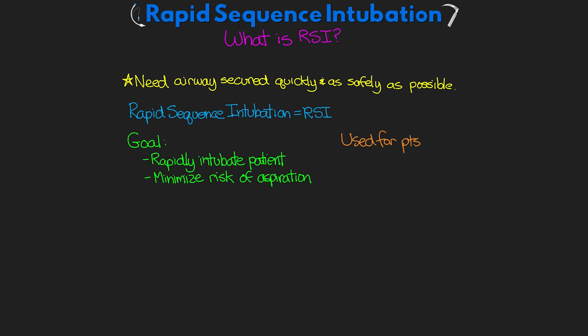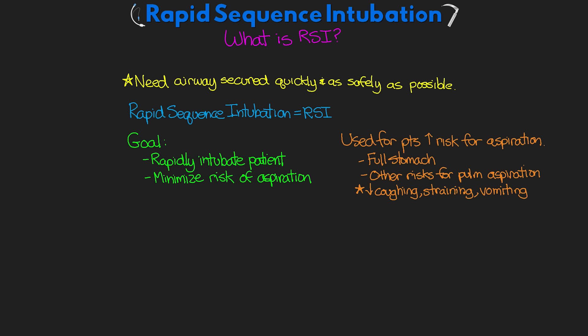RSI is to be used in patients who are high risk for aspiration. This can be a result of them having a full stomach or other risks of pulmonary aspiration. As mentioned previously, aspiration during intubation does put our patients at risk for pneumonia and ARDS. By utilizing RSI we can quickly establish a secured and protected airway while reducing the risk for aspiration, things such as coughing, straining, and vomiting.